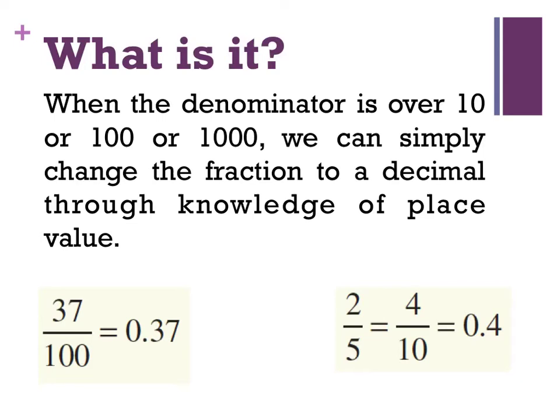When our fraction denominator is over 10 or 100 or 1000, it's really simple to convert it to a decimal. We can simply change the fraction to a decimal through our knowledge of place value. So this says 37 over 100. So we know that 7 are hundredths and then the 3 goes in our next decimal place as we learnt last lesson. So the first thing we'd do is we'd do 0. I'll put a 7 in the hundredths place value and then I know I'll put a 3 in the tenths place value because that's what they'd equate to.